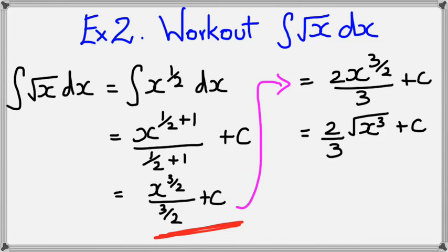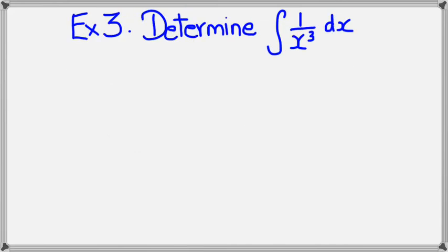On to the next example. In this example, I want to determine 1 over x cubed, integral of that. So the first thing that I would want to do here is rewrite x so that it's in the numerator. So this would become x to the power of negative 3 dx.